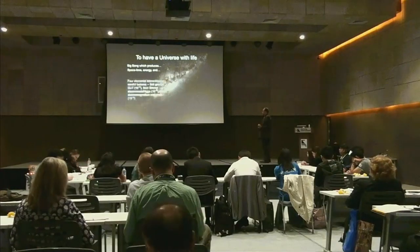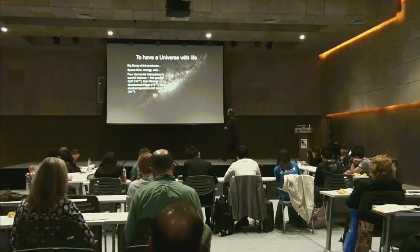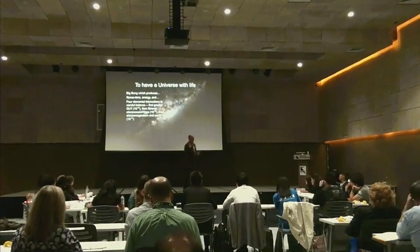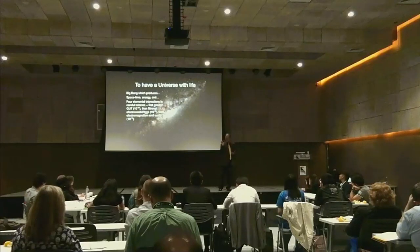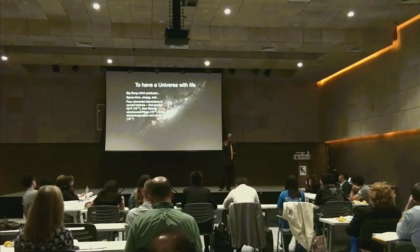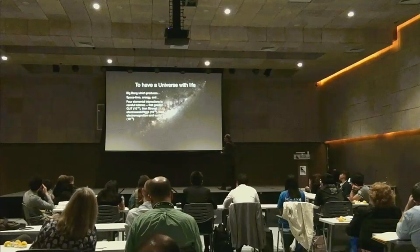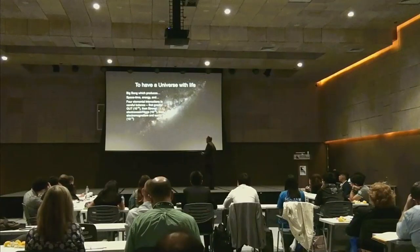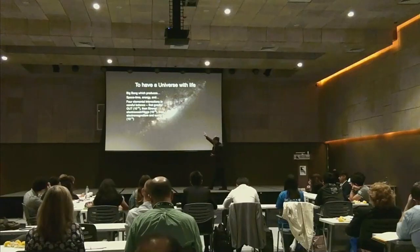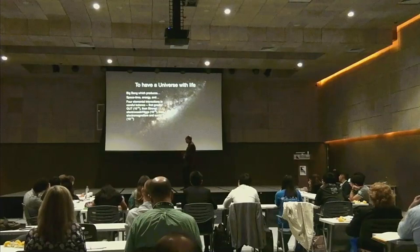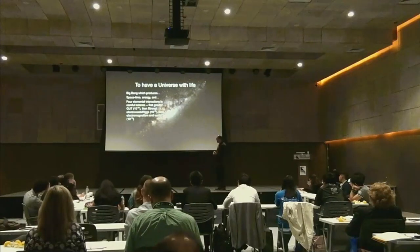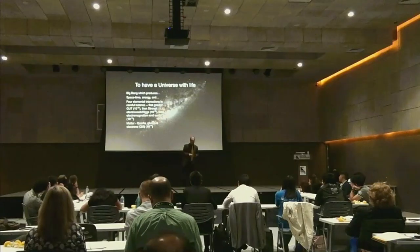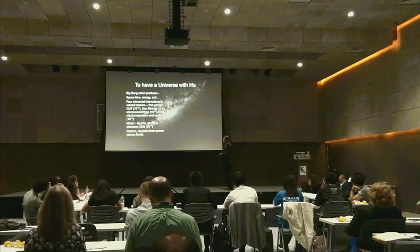The big bang produced spacetime and energy, and then the fundamental elemental interactions arrived in careful balance. I have written up here the exact fraction of a second inside that first second when each one arrived. Gravity arrived at 10 to the minus 43rd of a second — the earliest possible moment. The strong force and electroweak force and the Higgs boson at 10 to the minus 36th. Then electromagnetism and the weak force arrived at 10 to the minus 12th of a second. Then matter arrived at 10 to the minus 11th of a second — quarks, leptons, and electrons. Then protons and neutrons formed from quarks.